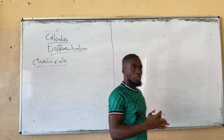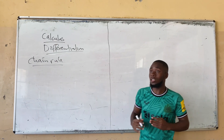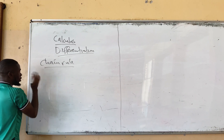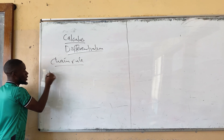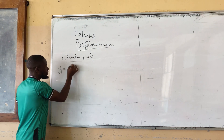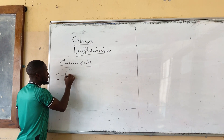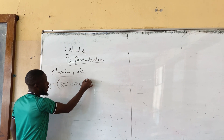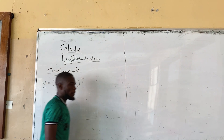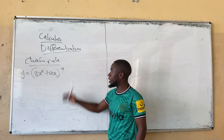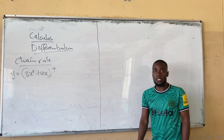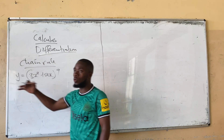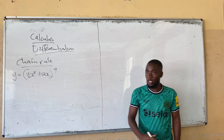Let's start with chain rule. I will start with the shortcut, the quickest way. Let's say we have Y equals (3x squared plus 2x) to the power 9. The moment you see this power here, you know that this is the general chain rule form.